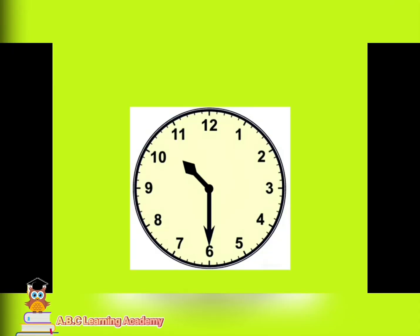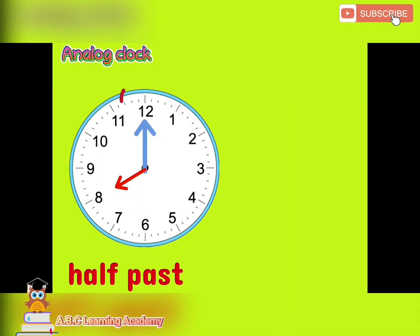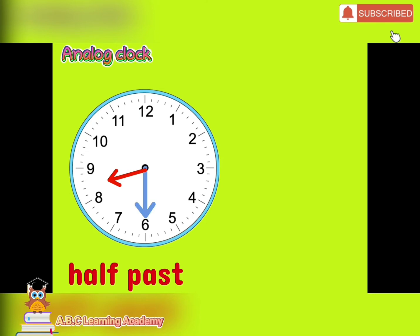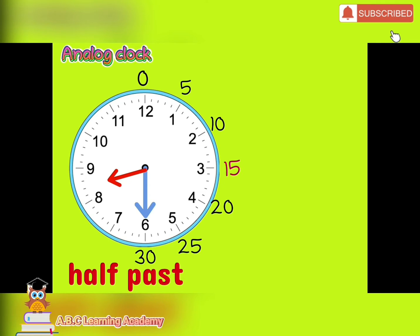Half-past. The minute hand will spin halfway around the clock face, just like this. It is now pointing at number 6. We already know that we can count the marks on the outside edge of the clock face that represent minutes, and it is easier and quicker to count in fives. Let us count: 0, 5, 10, 15, 20, 25, 30.